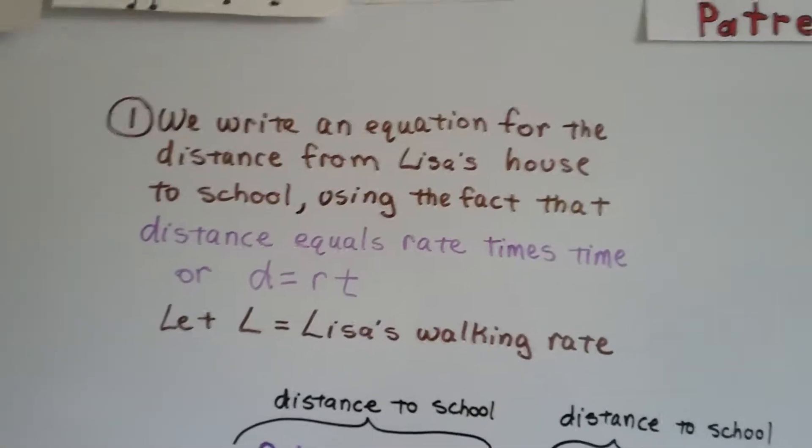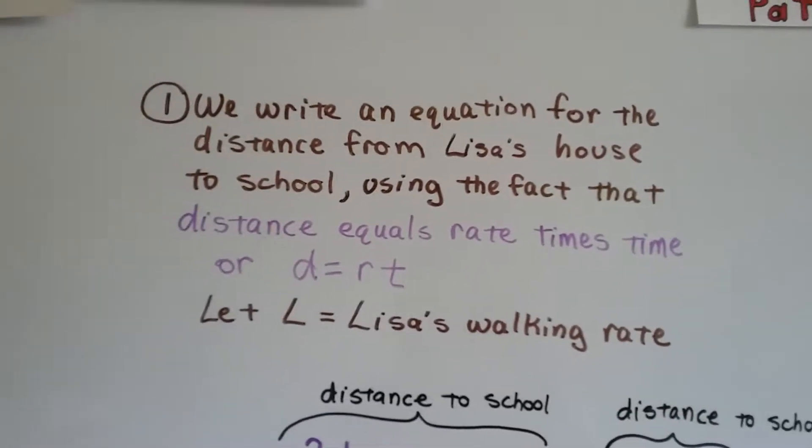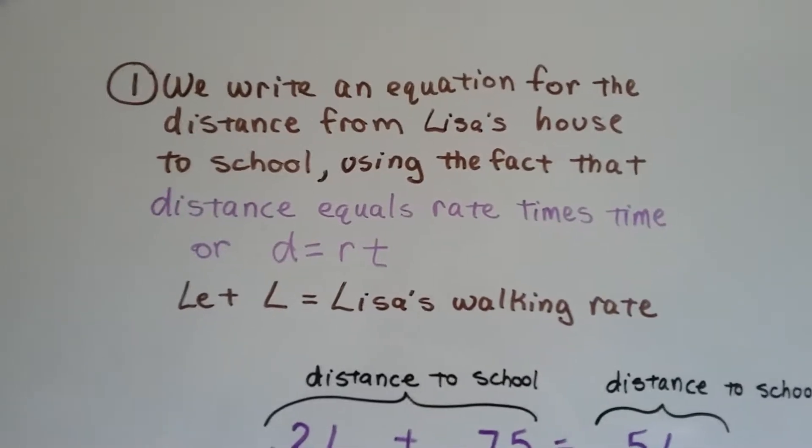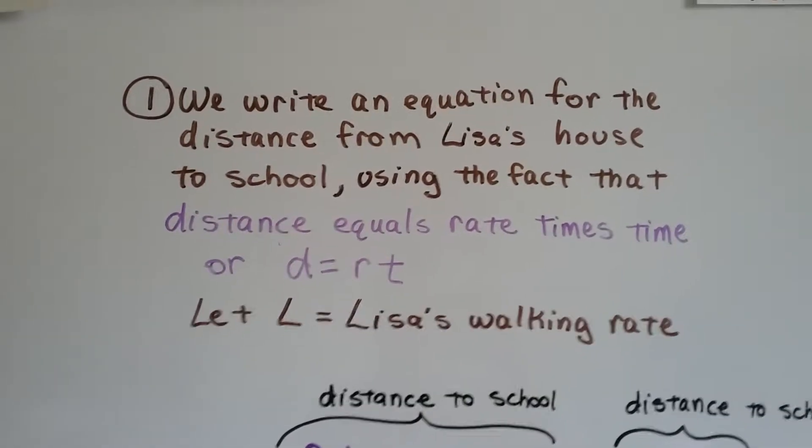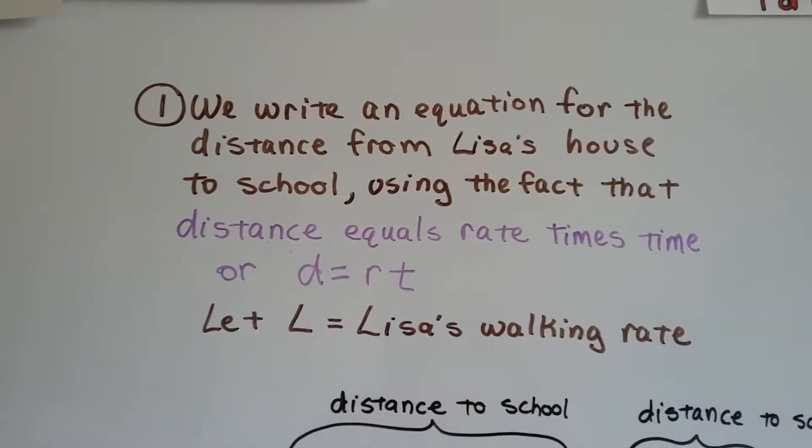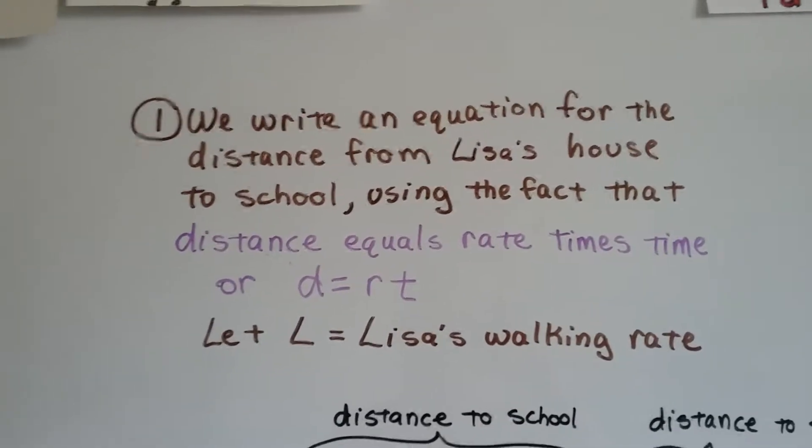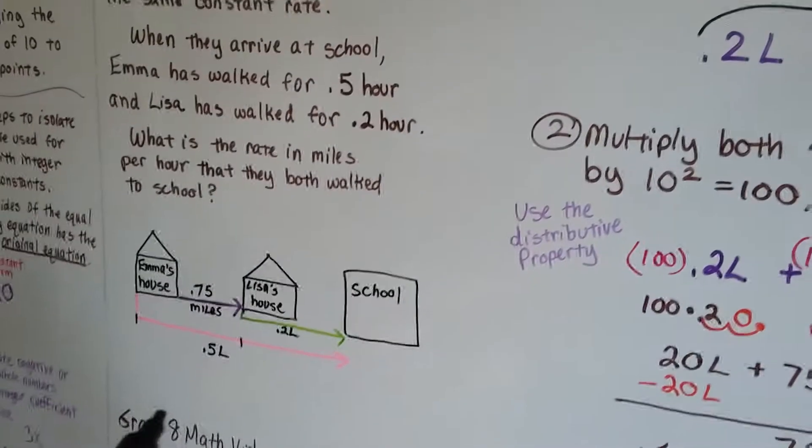We write an equation for the distance from Lisa's house to school using the fact that distance equals rate times time. Remember? D equals RT. Distance equals rate times the time. So we're going to let L equal Lisa's walking rate.